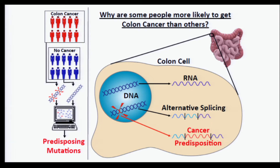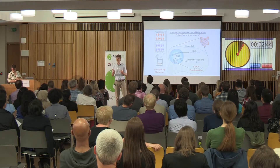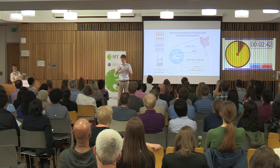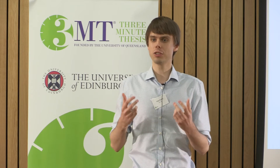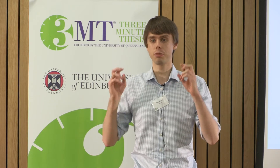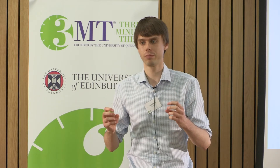These mutations can be caused by smoking, sunburn, or poor diet. However, unfortunately, some people are born with certain mutations already in their DNA, which make them more likely to get cancer during their lifetime, and this is called having cancer predisposition.